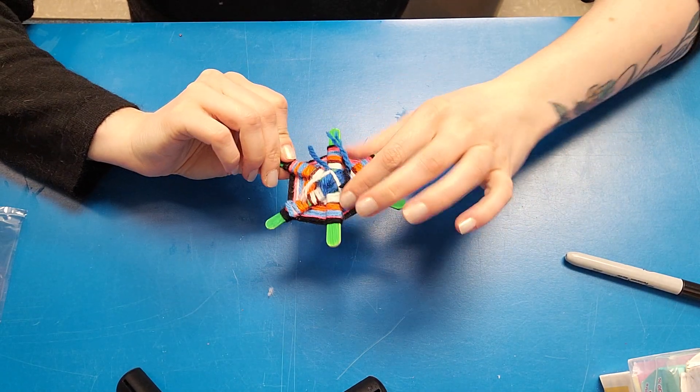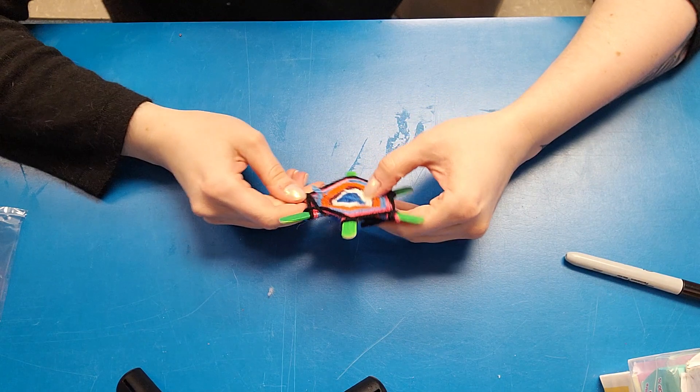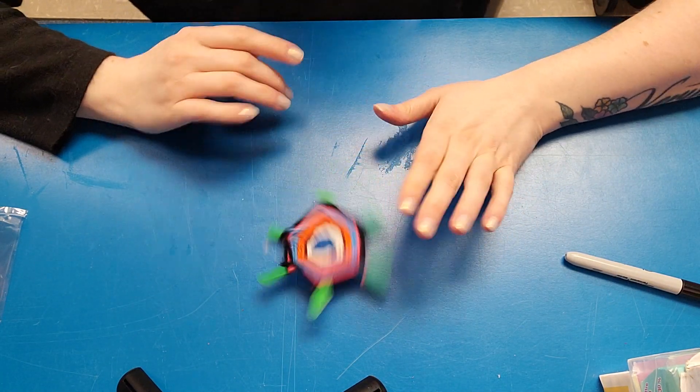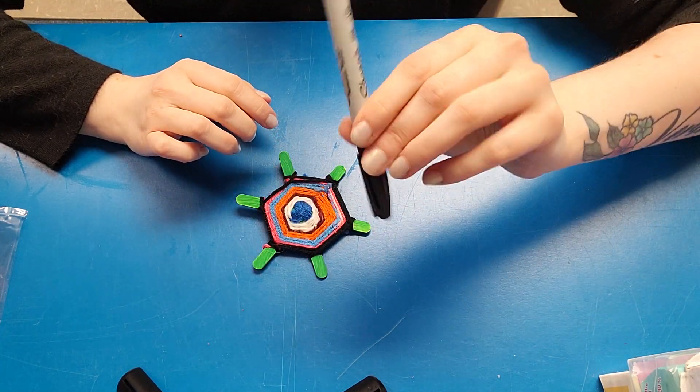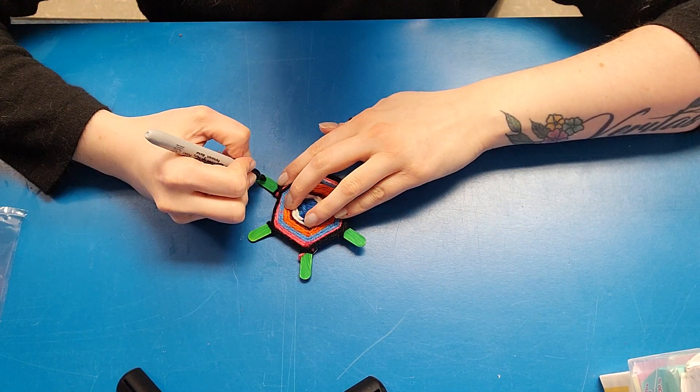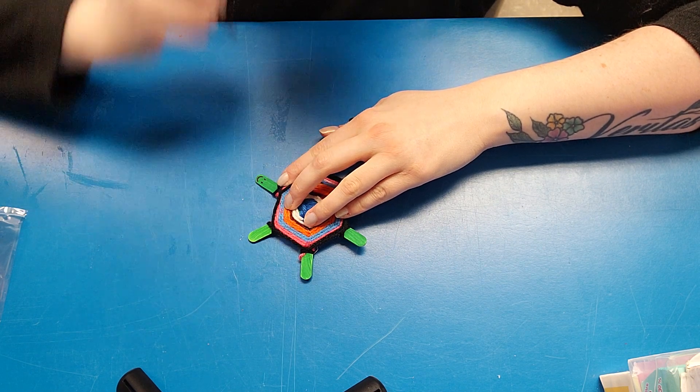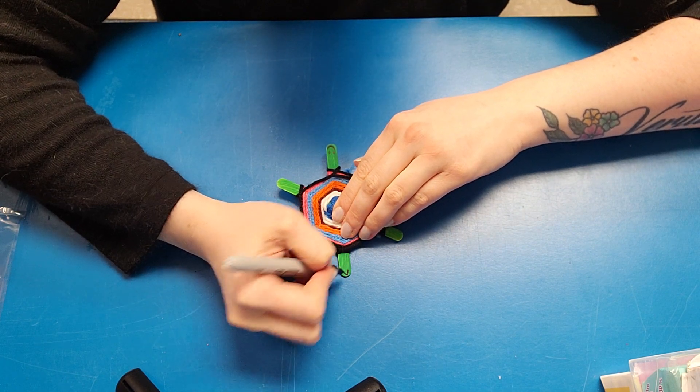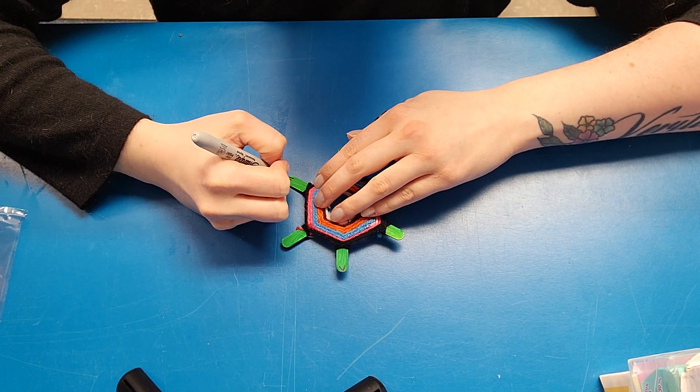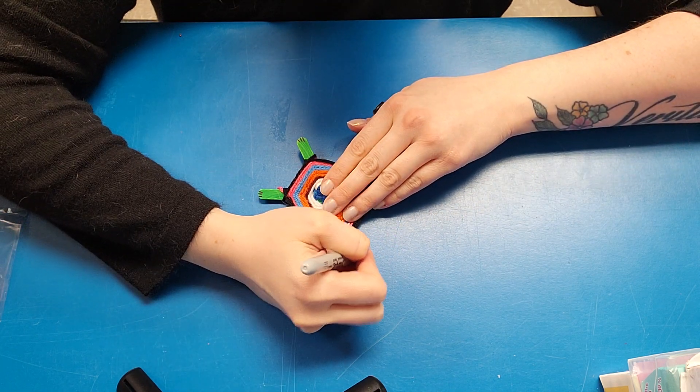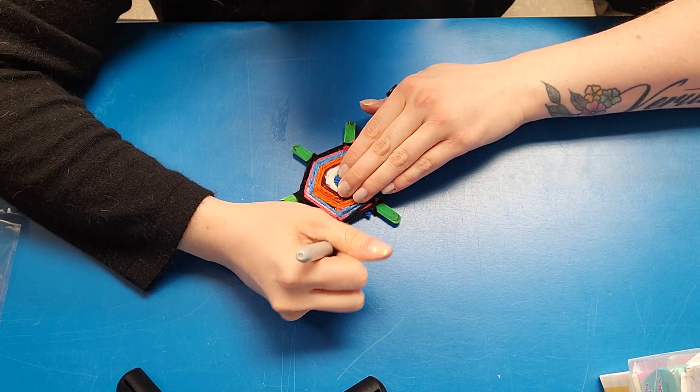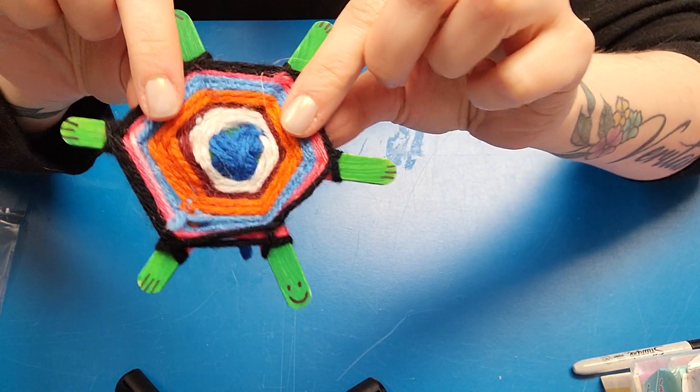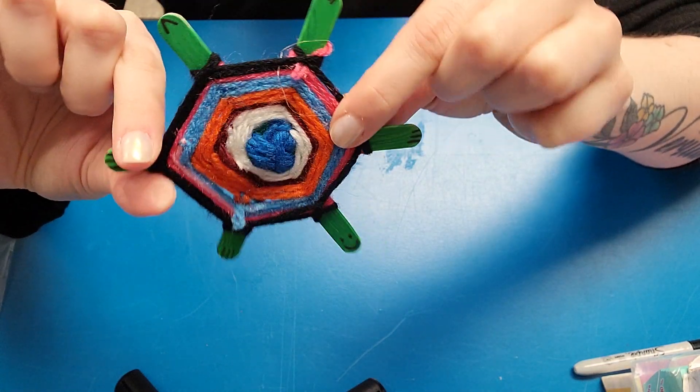You could trim some of these knots if you wanted. I'm drawing a smiley face, which means right across from that would be the tail. And then these would be feet. So I'm going to give him some toes. And that is my little yarn turtle friend.